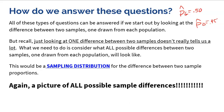But that one 5% difference doesn't mean the true difference is 5%. The truth could be bigger, smaller, or even negative. In these particular samples, girls do their homework more often than boys, but it might actually be true that boys do their homework more often. Samples vary, so just looking at the difference between two samples doesn't tell us a whole lot. What we need to do is build a sampling distribution, because that shows us what all possible sample differences could be.